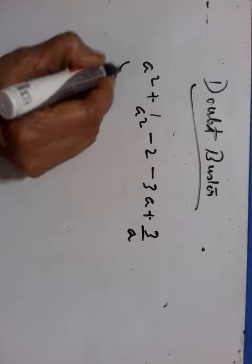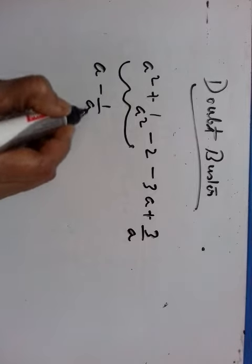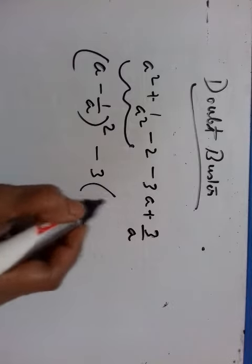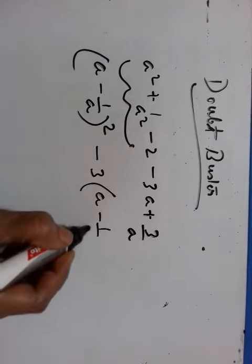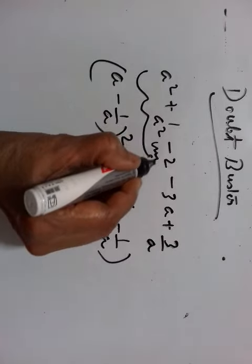In this case what is this? a minus 1 upon a whole square, this minus 3. What remains inside? a minus 1 upon a. So your question was where this minus 2 has gone?